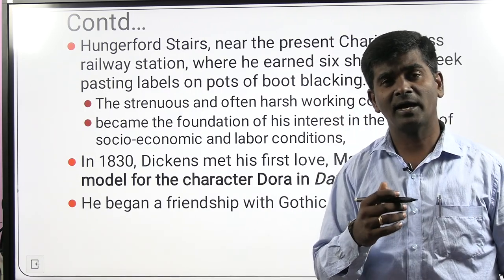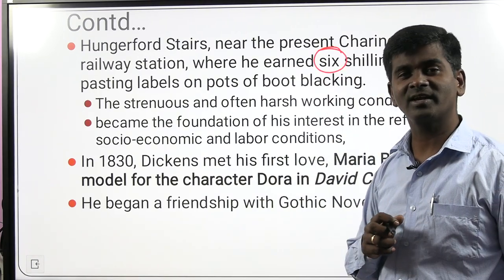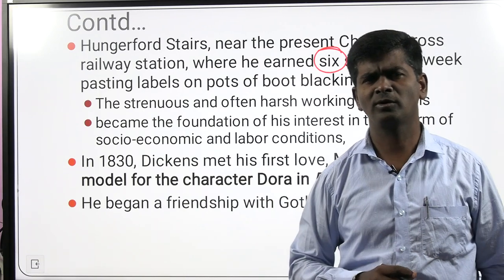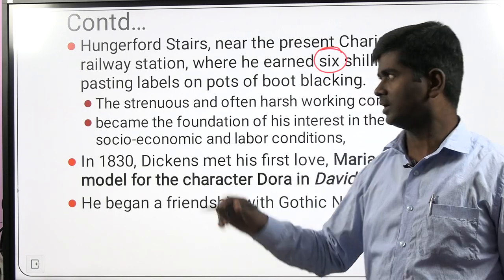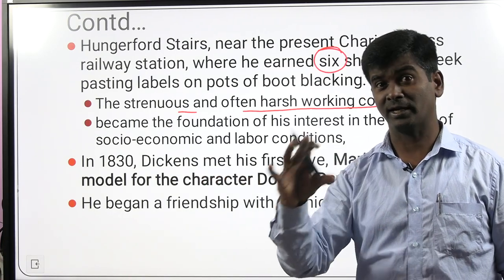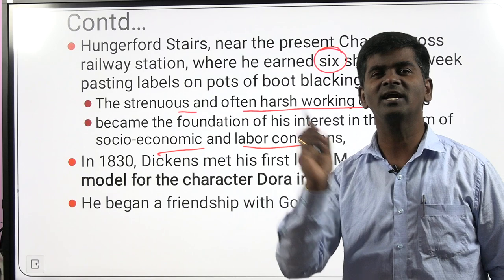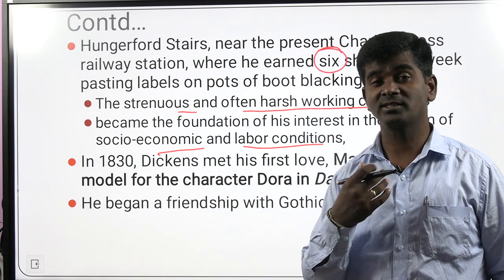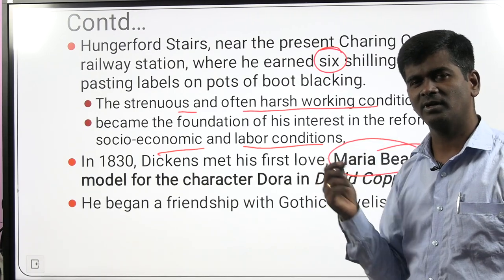During his childhood Dickens worked in a railway station — Hungerford station — where he used to get six shillings per week. The impact on his becoming a wonderful writer came from his strenuous working conditions at Warren's warehouse, the conditions of his family, and the socio-economic and labor conditions of England during 1830–1850. These influenced Dickens to become a social and realistic novelist. In 1830, Dickens met his first love, Maria Beadnell, who became part of the novel David Copperfield.